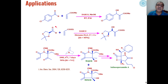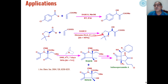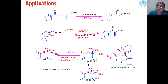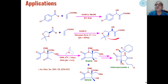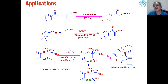Similarly, activated aldehydes react with ethyl acrylate in the presence of DABCO to give the corresponding Baylis-Hillman products. When enantioselective aldehydes are used, we will get enantioselective products — that is, an asymmetric Baylis-Hillman reaction will take place.